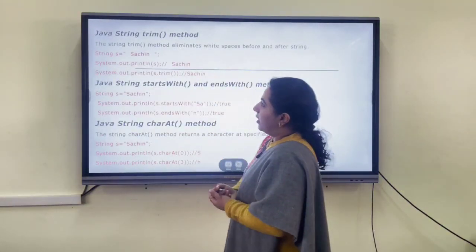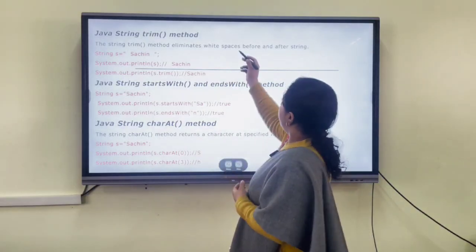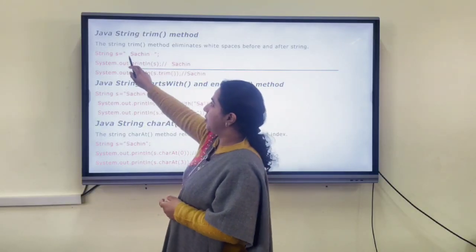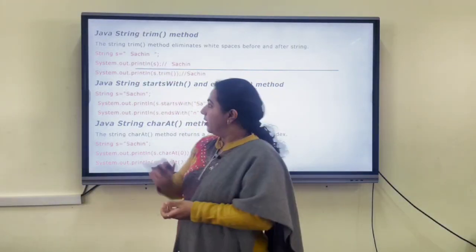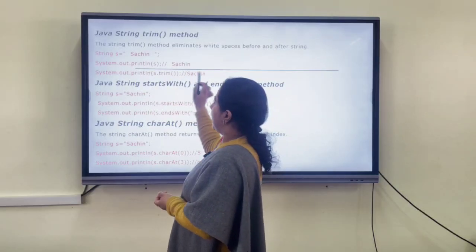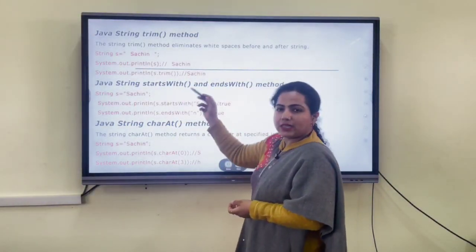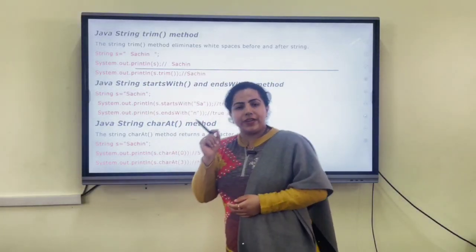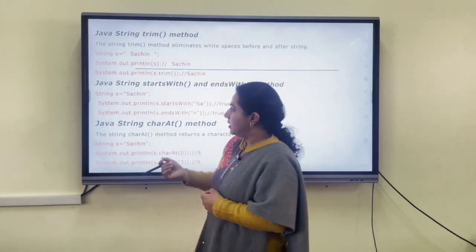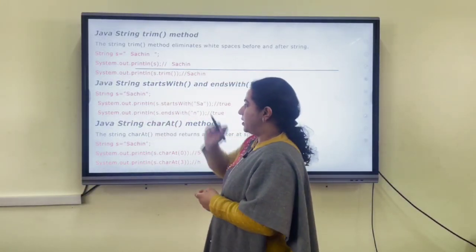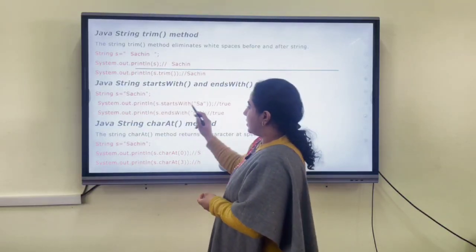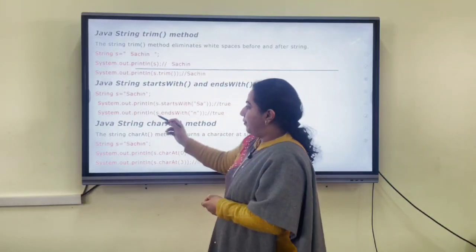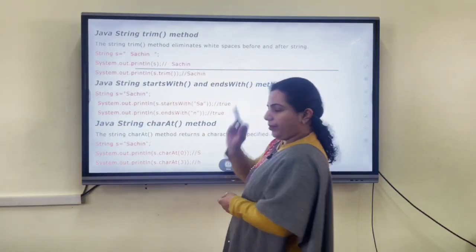The trim() method eliminates white spaces before and after a string. If we have a string with spaces before and after it, calling trim() removes those spaces from the output. Next are the startsWith() and endsWith() methods. In startsWith(), we specify the characters from where we want the string to start — for example, s.startsWith("sa") on the string "Sachin" returns true. Similarly, s.endsWith("n") also returns true.